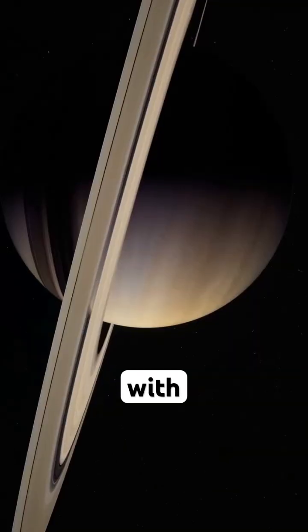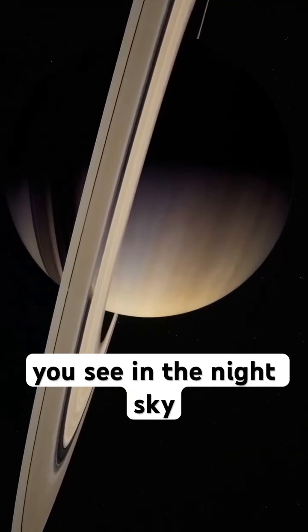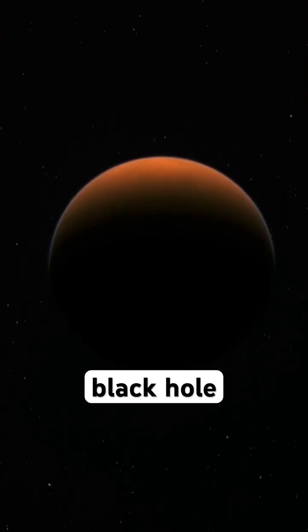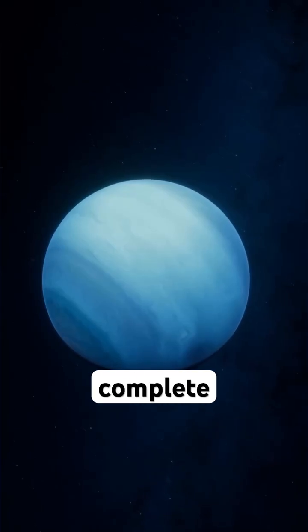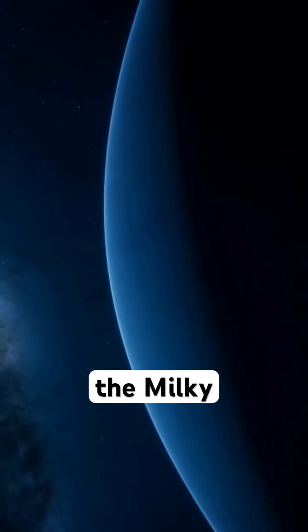Our sun, along with every other star you see in the night sky, is racing around this black hole at incredible speed, taking 230 million years to complete just one orbit.